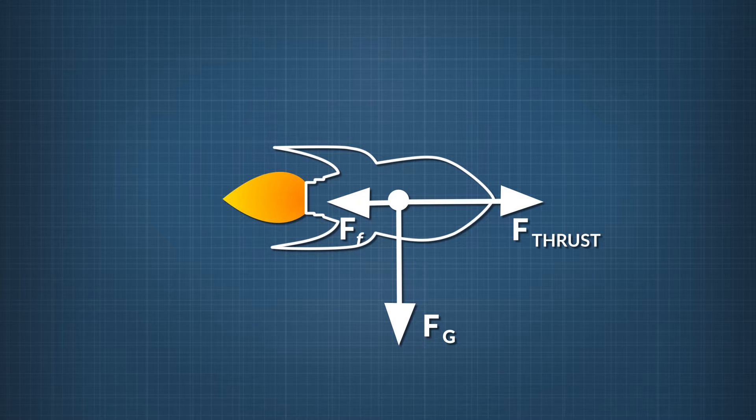Using our completed free body diagram, we know that the forces acting on the rocket are gravity, engine thrust, and air resistance or friction. We also know the rocket is accelerating down because of gravity, and forward because the thrust force is stronger than friction.